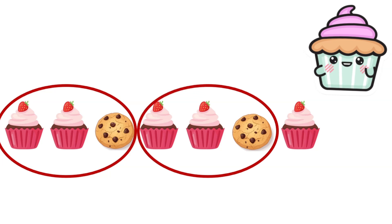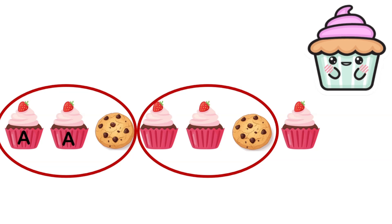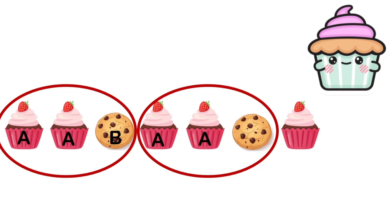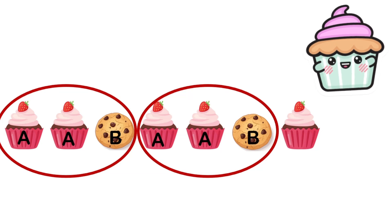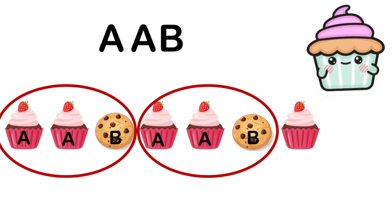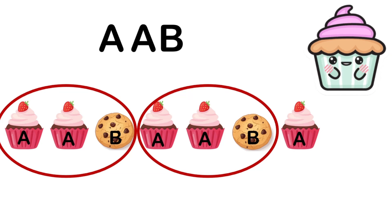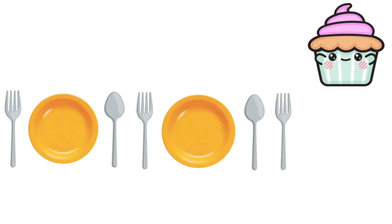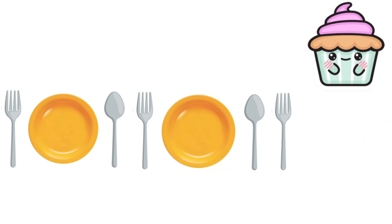Here we have another fun pattern. The pattern is: cupcake, cupcake, cookie, cupcake, cupcake, cookie. Let's give each part a name — we'll call the cupcake A and the cookie B. We have A, A, B — then again A, A, B. The pattern name is AAB. Now we have another cupcake — A. According to the pattern name, we should have another A after that, which is another cupcake. Good job!